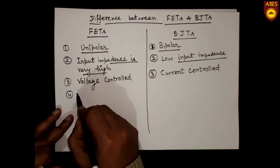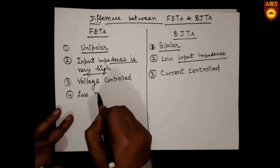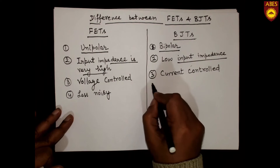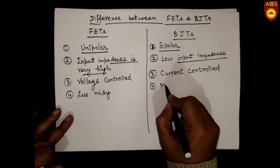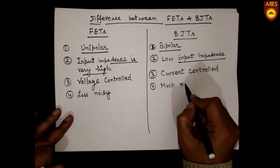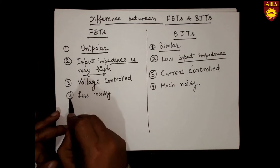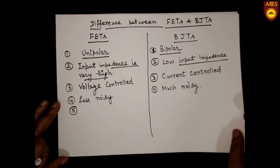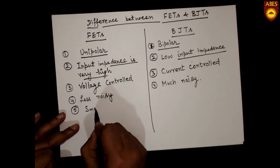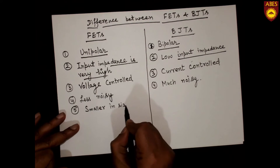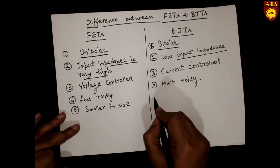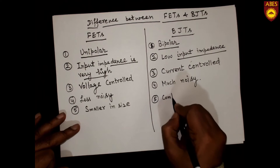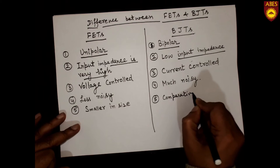FETs are also called less noisy devices in comparison to bipolar junction transistors, which are much noisier. Another difference is that BJTs are smaller in size compared to FETs, which are comparatively bigger in size.